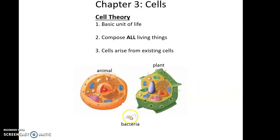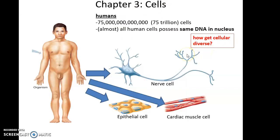All living things are made up of cells — animals, plants, bacteria, fungus, and so on. Cells arise from existing cells; if you want a plant cell, it's going to come from an already existing plant cell. In human beings, we are composed of 75 trillion cells — a huge number.